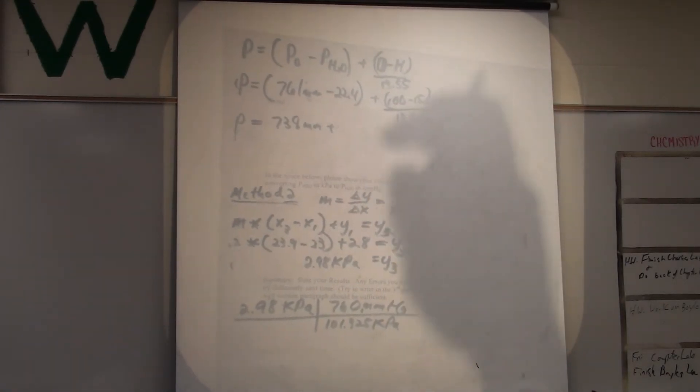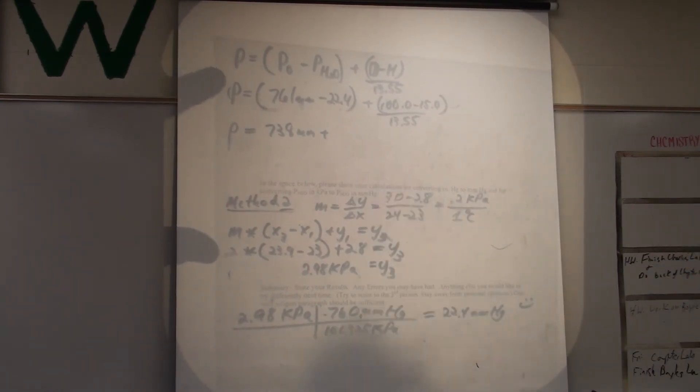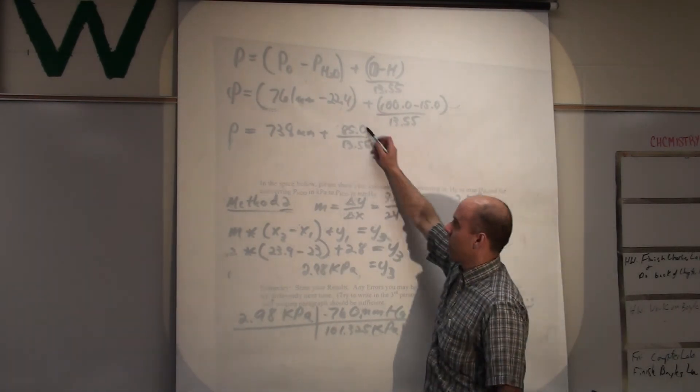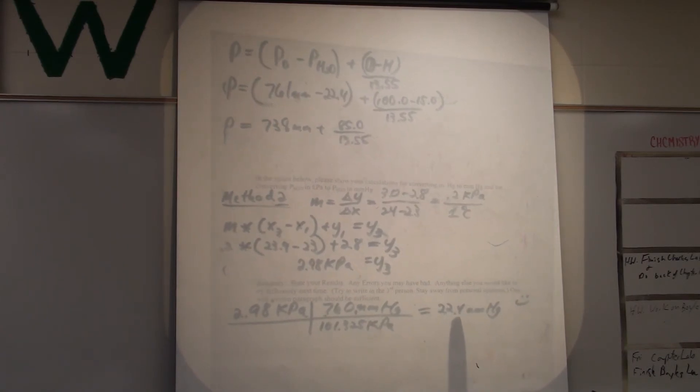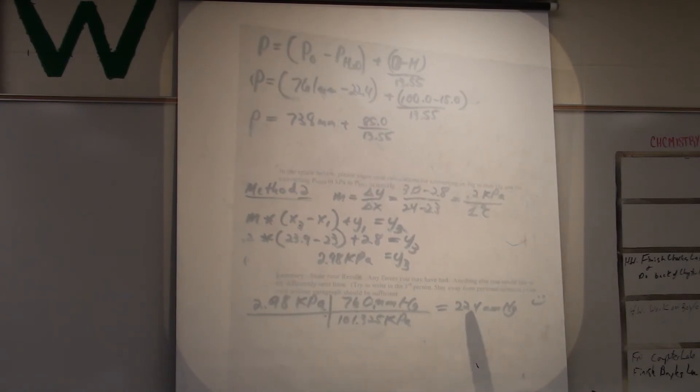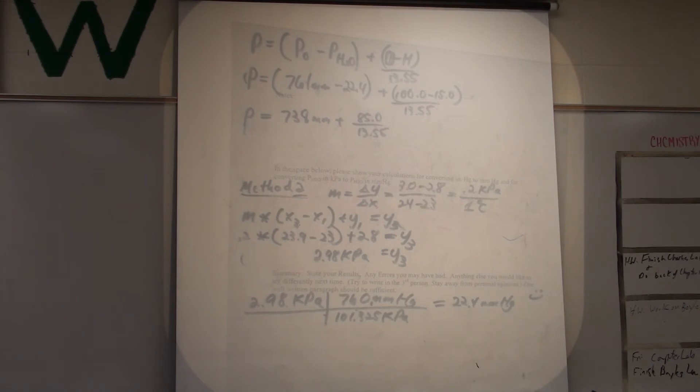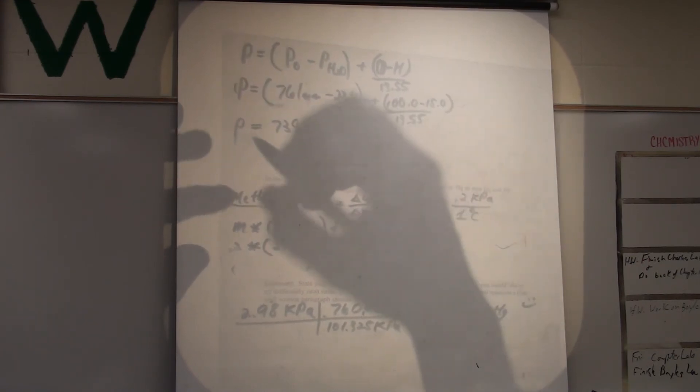This is 85 divided by 13.55. Oh, and I didn't put all my sig figs, bad, naughty. So that would actually come out to be 85.0 over 13.55. So, when I do this division, I'll end up with three sig figs when I'm done. Student asks about rounding to 739. Yours might be a little bit different because everybody had different temperatures. So, my temperature was 23.9. Your temperature was 24. So, your KPA was a little bit different. So, you might round off a little different up there. So, 85 divided by 13.55. I get, with three sig figs, 6.27 millimeters.